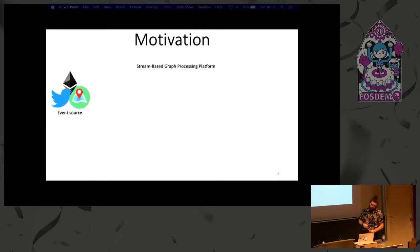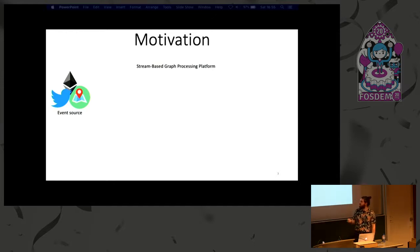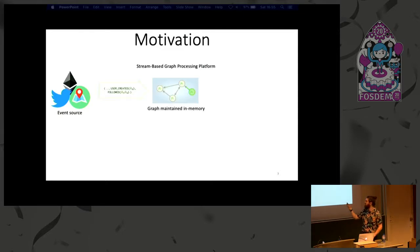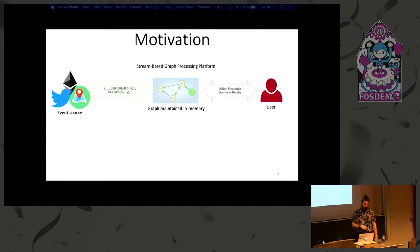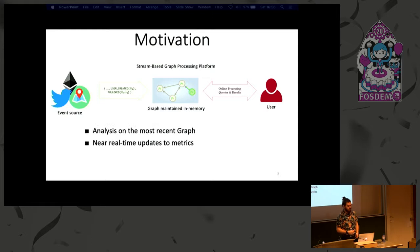This is improved with stream-based graph processing systems where you have some event source out in the wild. Some of the examples we've been looking at are cryptocurrencies, mapping data — so people moving around cities — and obviously social networks. Changes in these event sources can then affect your in-memory graph. In the case of a social network, you might have a user joins the network, someone follows their friend, and so on. These can all be inserted in, and then users of your system can query this and get their results back.